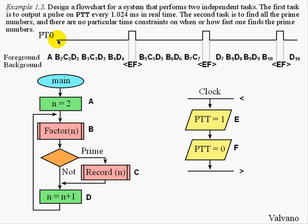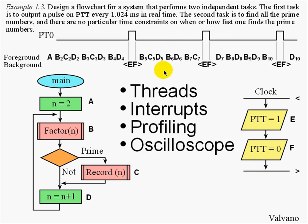An oscilloscope is a hardware debugging tool, allowing us to visualize the time sequence of the output or input signals of a microcontroller. In this case, the scope will plot the digital level on the y-axis, which can be a 0 or a 1, versus time on the x-axis. In this way, we can visually see the execution pattern of our software and guarantee that the pulse does indeed occur every 1.024 milliseconds.